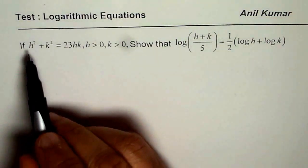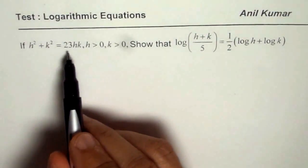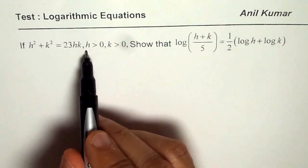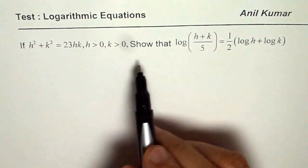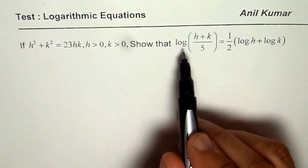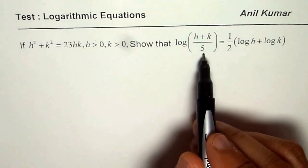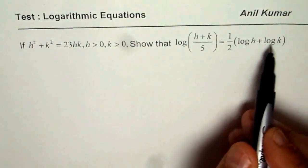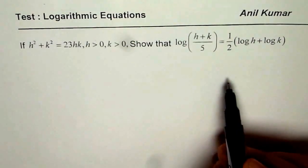The question here is, if h² + k² = 23hk, where h > 0, k > 0, show that log((h+k)/5) = 1/2(log h + log k).